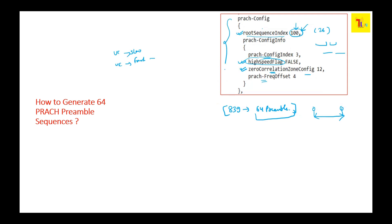To summarize the example: root sequence index is 100, which means this is the starting point from where it will start doing the cyclic shift, and it will keep doing the cyclic shift until 64 preambles are generated. The cyclic shift step size is defined by zero correlation zone config.